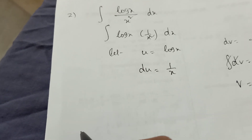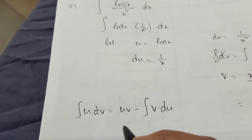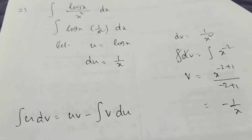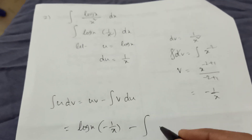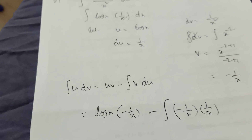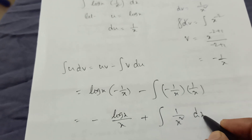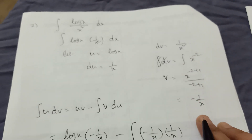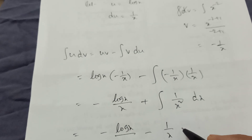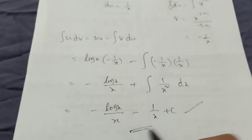Apply the formula ∫u·dv = u·v − ∫v·du. u = log x, v = −1/x. So we get: log x · (−1/x) − ∫(−1/x)·(1/x)dx. The minus signs give: −(log x)/x + ∫(1/x²)dx. Integration of 1/x² is −1/x. So the final answer is −(log x)/x − 1/x + c.